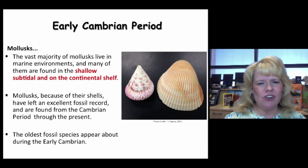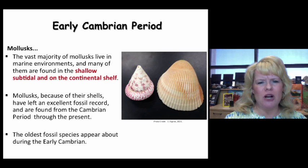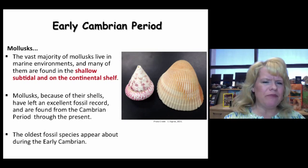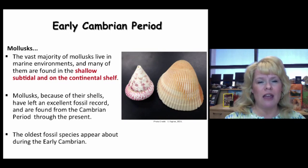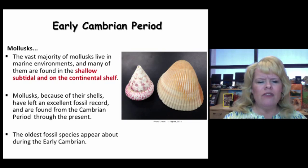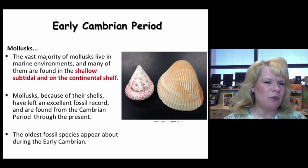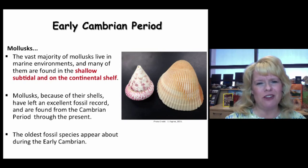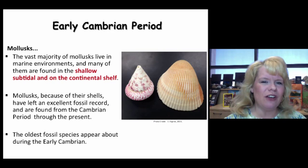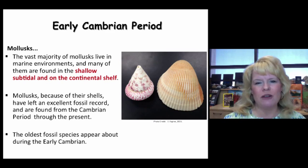Mollusks appeared during the early Cambrian, including bivalves, gastropods, and some non-coiling cephalopods. Most lived in shallow marine and subtidal environments — where you would pick up seashells today. They left an excellent marker in the rock record from the Cambrian all the way to the present. Some shelly animals haven't changed much; others have changed dramatically. Some we no longer have, looking almost like experiments from the early Paleozoic. The earliest fossil mollusks appear in the early Cambrian.